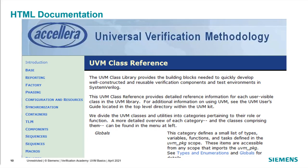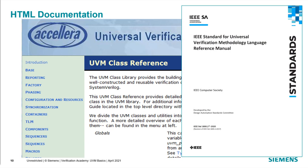UVM started as an Accellera standard back in 2011. The official standard was a set of HTML documentation for the class library including all classes and their interfaces, with a reference implementation that could be compiled and used with any compliant simulator. Back in 2017, UVM became IEEE 1800.2, and a new version was released in 2020. The 1800.2 standard only defines the user-facing API, providing more flexibility for optimizing implementations. Accellera continues to maintain a reference implementation that matches the 1800.2 standard.